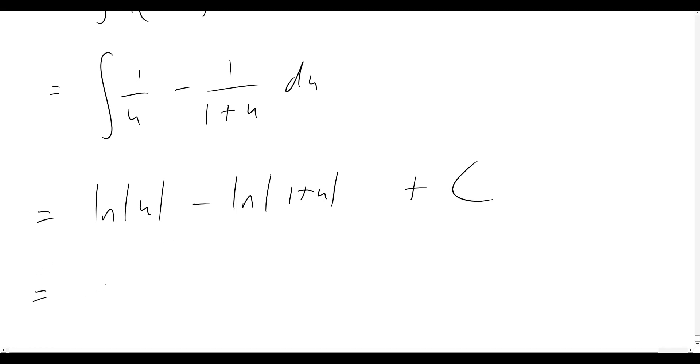Okay, and so now last step here, let's remember that u is equal to e to the x. So then it will be the natural log of e to the x. We know that will just actually just become an x, since the natural log cancels out with that exponential there.